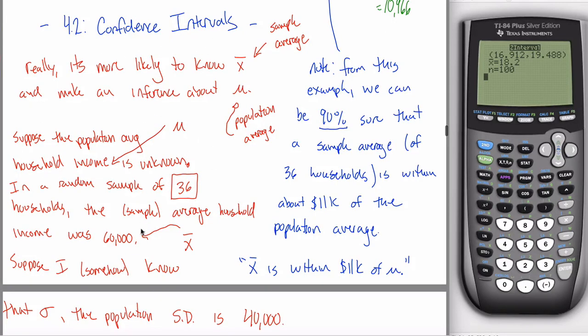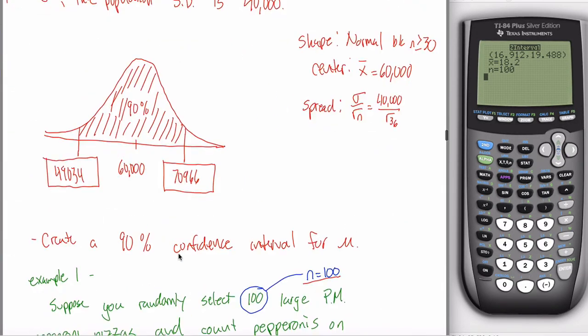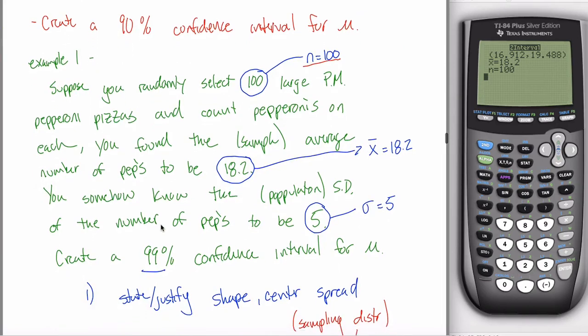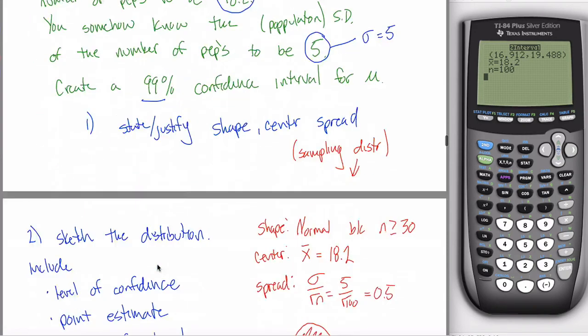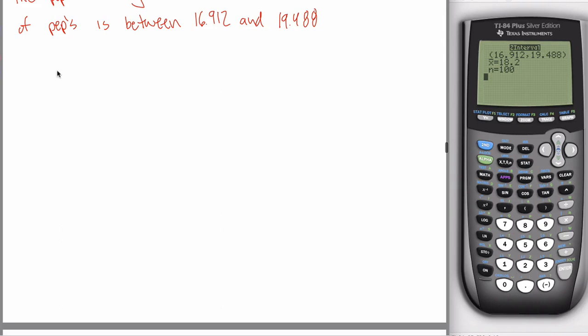I want to do one more example for confidence intervals, which is 4.2. In the last video, we did a quick example where we talked about the number of pepperonis on a pizza. I wasn't thinking of anything creative. On that note of not coming up with anything new, let's do another example.